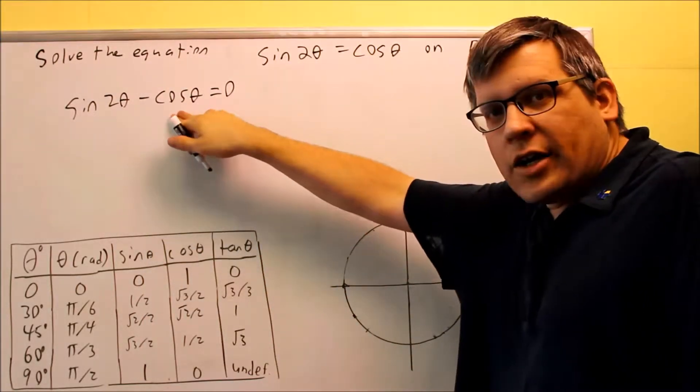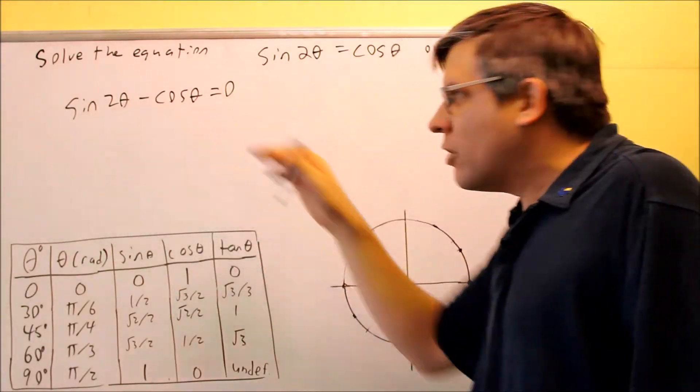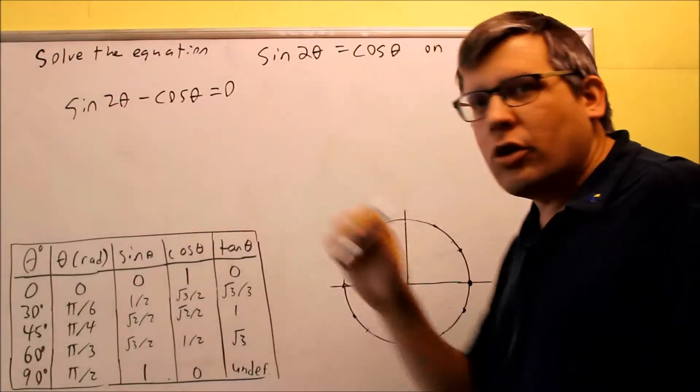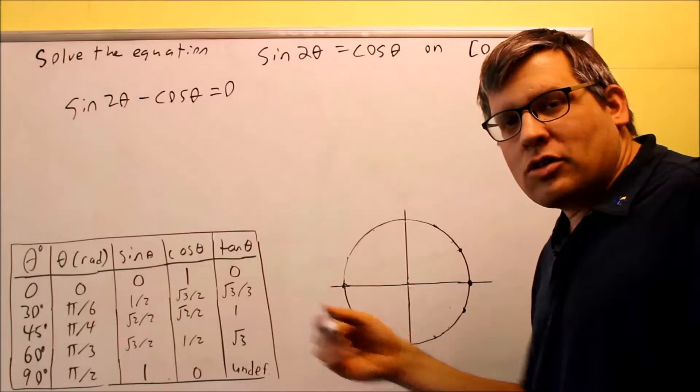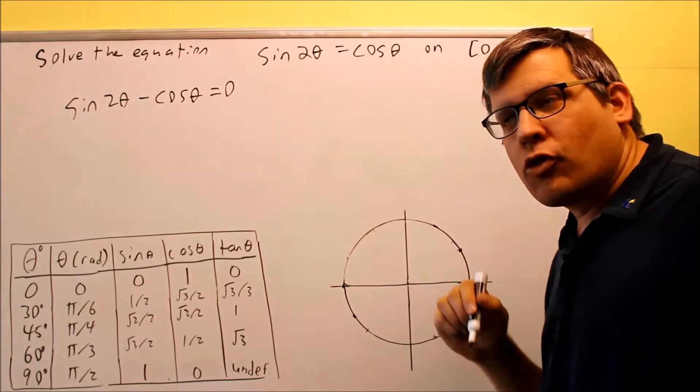Now, we get to a roadblock here because there's no common factor, nothing we can pull out. So if you get to that point, you probably need to put an identity in there to allow you to be able to go further with the problem.